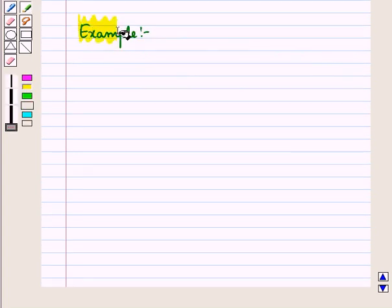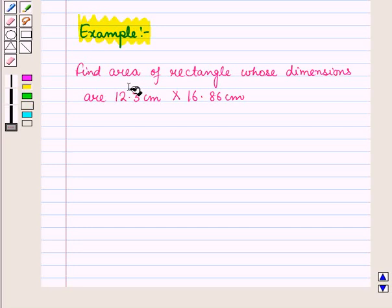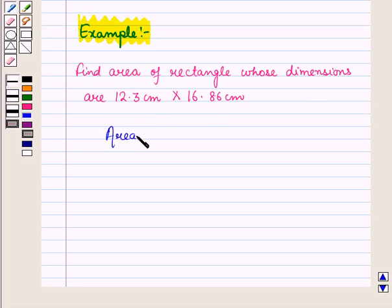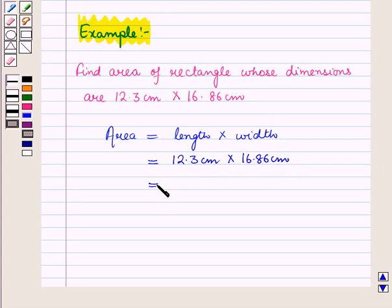Let us discuss an example. Let us find area of rectangle whose dimensions are 12.3 centimeters by 16.86 centimeters. Now area of rectangle will be equal to length into width, so this is equal to 12.3 centimeters into 16.86 centimeters, which is equal to 207.378 centimeters square.